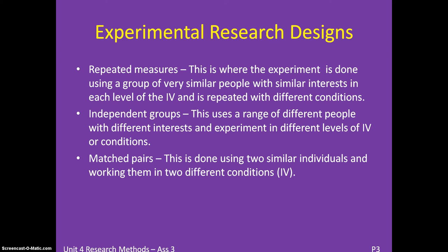Independent Groups uses different people rather than similar people — a range of individuals with different interests, experimenting across different levels of the independent variable and conditions. Match Pairs uses two individuals working in two different conditions of the independent variable, using similar people rather than specifically the same or entirely different participants.